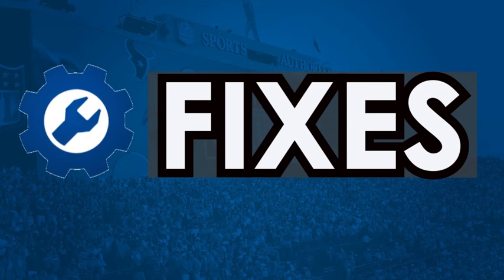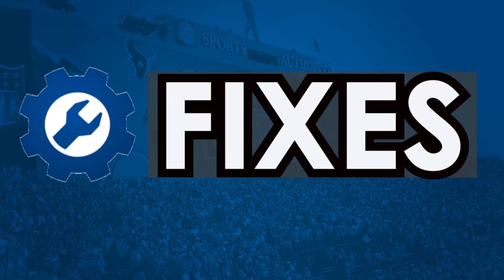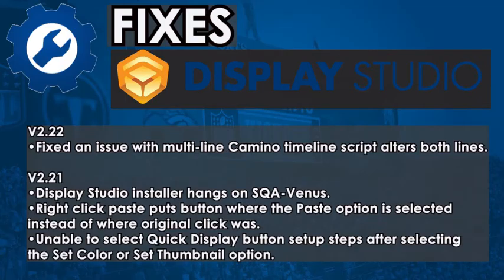Display Studio fixes in version 2.22: fixed an issue with multi-line Camino timeline script alters both lines. Version 2.21 fixes: Display Studio installer hangs on SQA Venus; right-click paste puts button where the paste option is selected instead of where original click was; unable to select quick display button setup steps after selecting the set color or set thumbnail option.